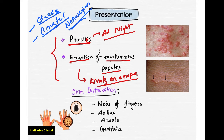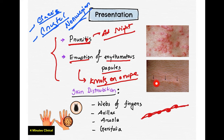The 'knots on a rope' appearance refers to the visible burrow tracks. You can see the burrow tracks in the skin of a scabies patient. The classic distribution includes the webs of the fingers and the axilla. Classic scabies presents with eruption of erythematous papules, skin burrows, and intense or severe itching especially at night.